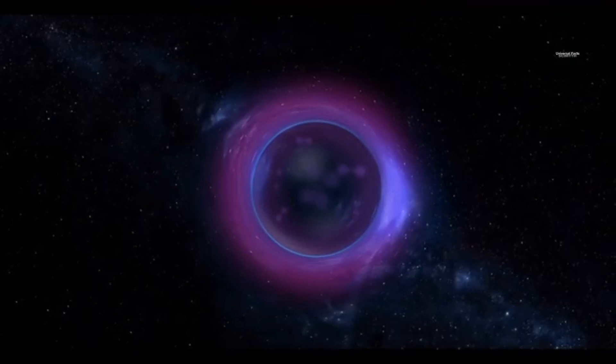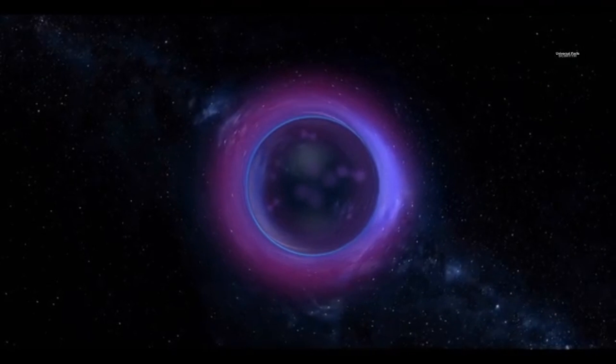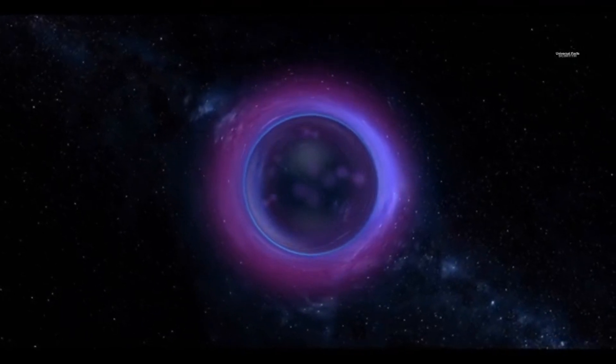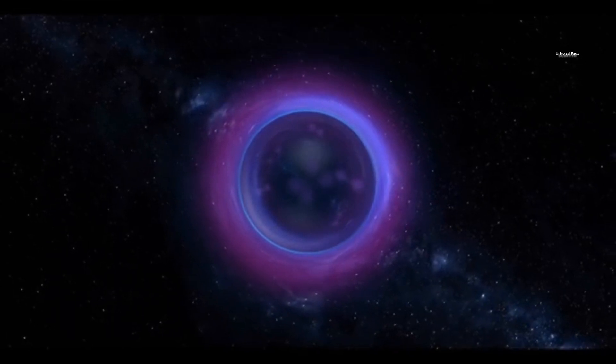Gravistars lack a defined boundary, such as the event horizon that surrounds black holes. Yet when viewed from a distance, the outer shell of a gravistar can resemble an event horizon.